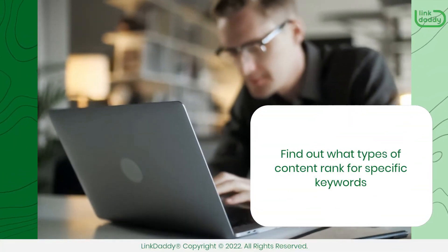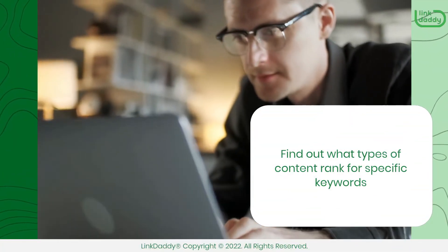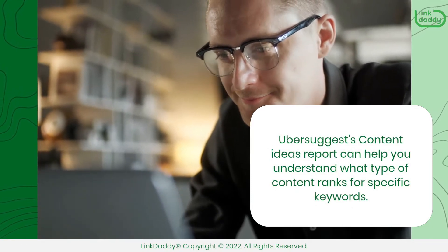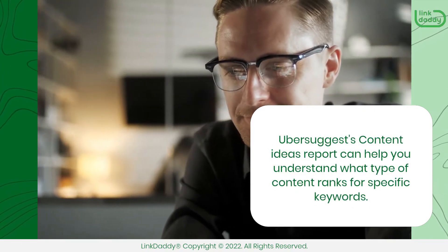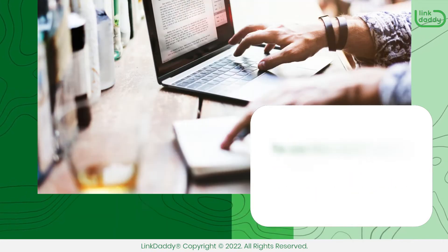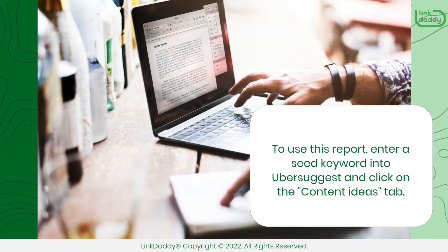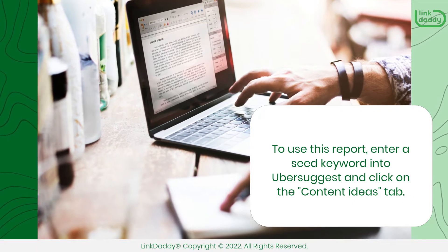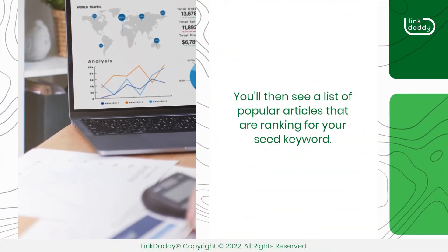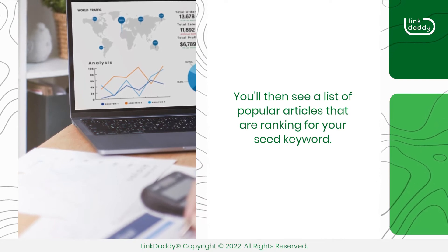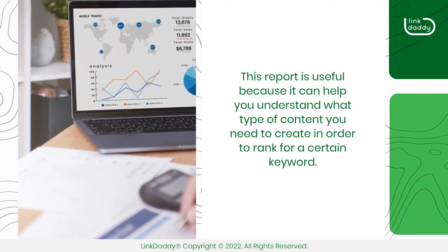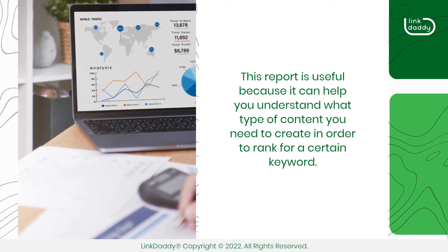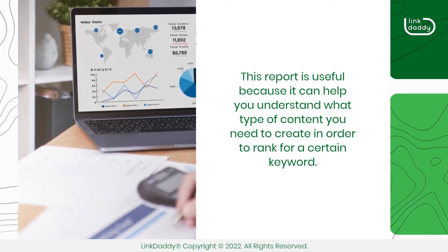Find out what types of content rank for specific keywords. Ubersuggest's Content Ideas report can help you understand what type of content ranks for specific keywords. To use this report, enter a seed keyword into Ubersuggest and click on the Content Ideas tab. You'll then see a list of popular articles that are ranking for your seed keyword. This report is useful because it can help you understand what type of content you need to create in order to rank for a certain keyword.